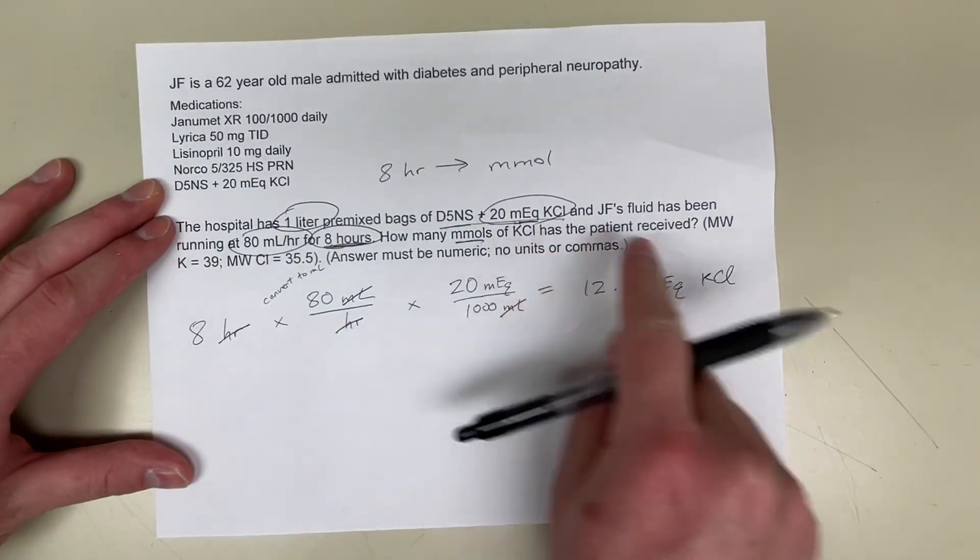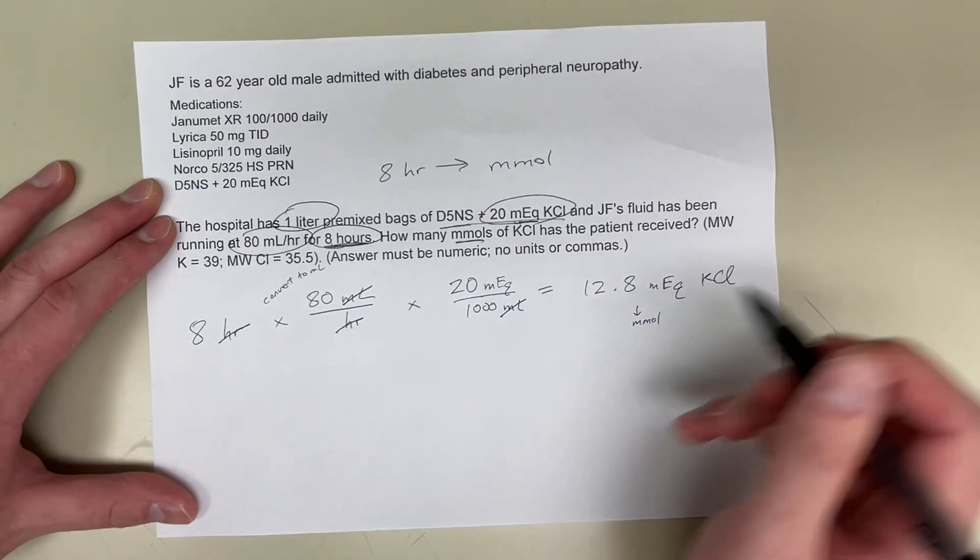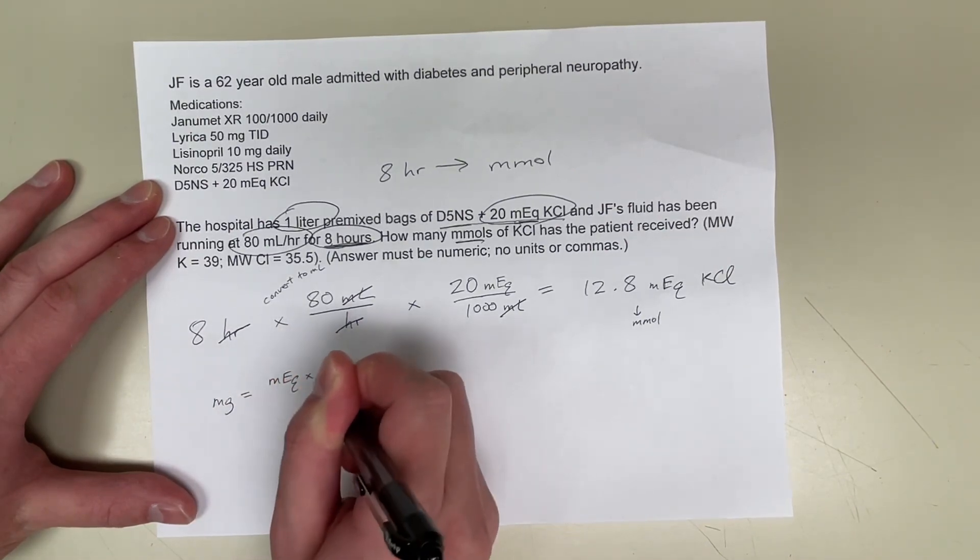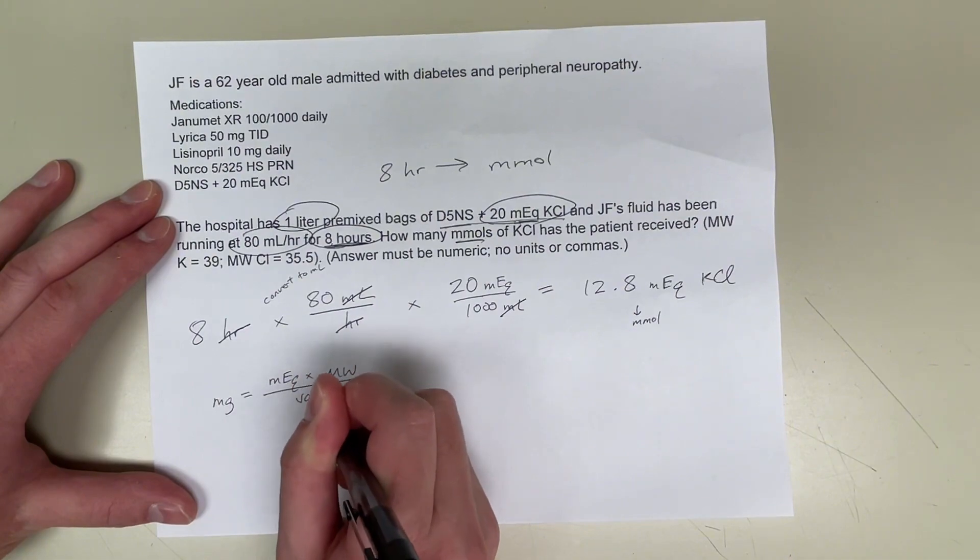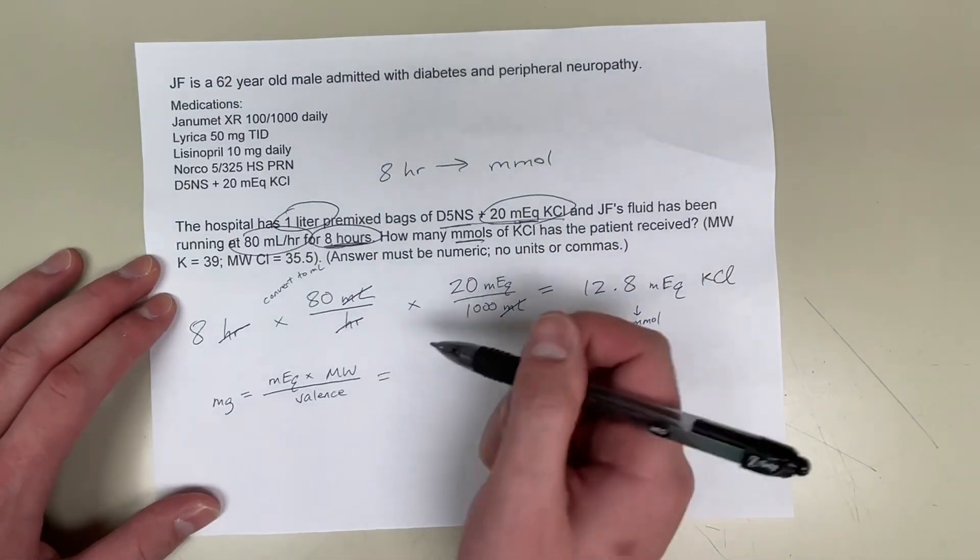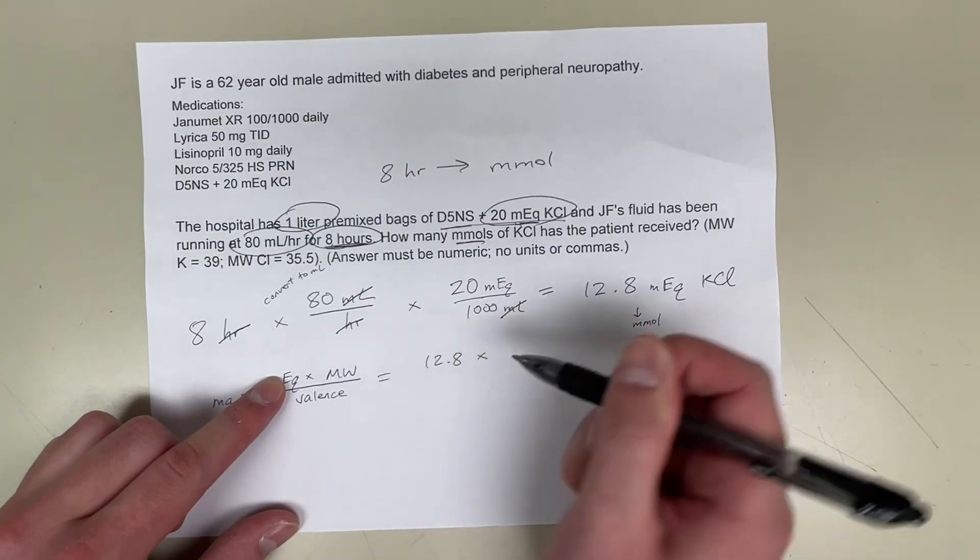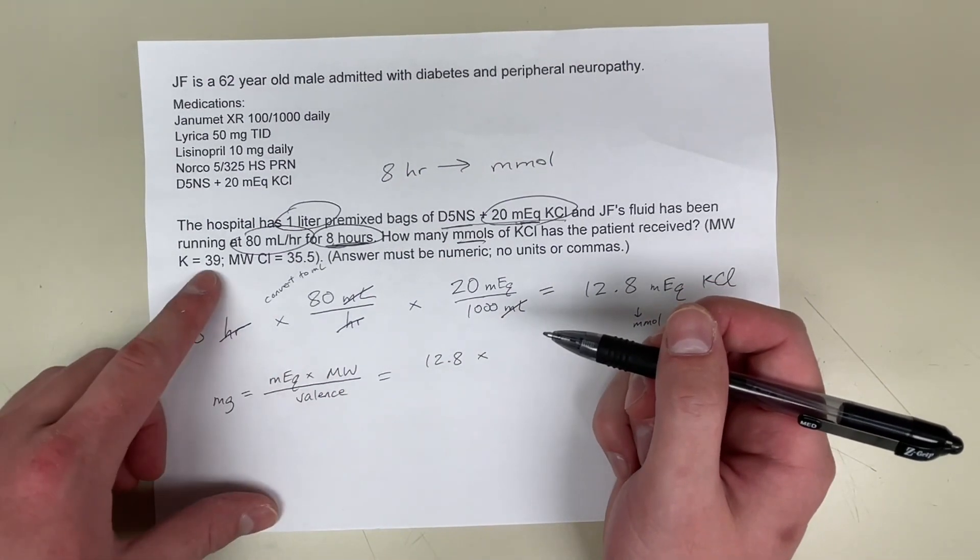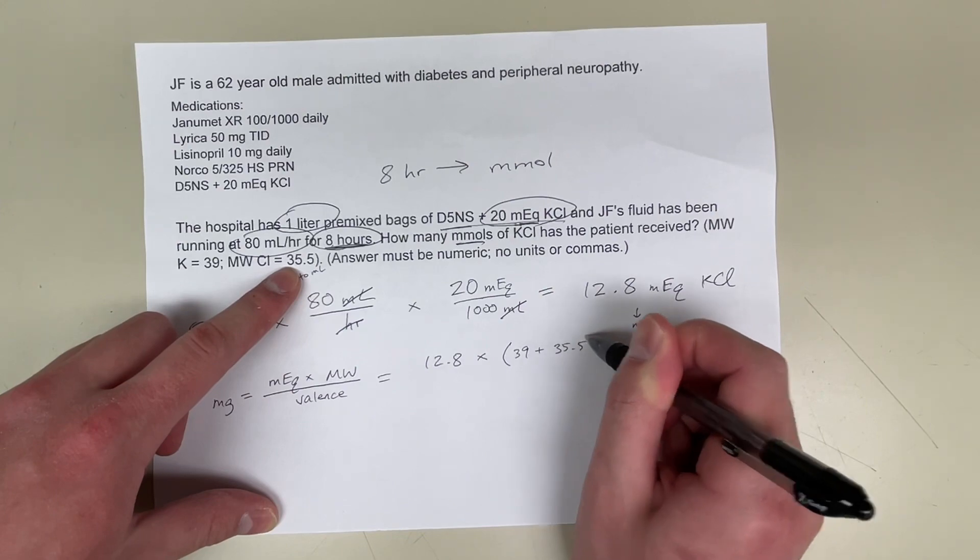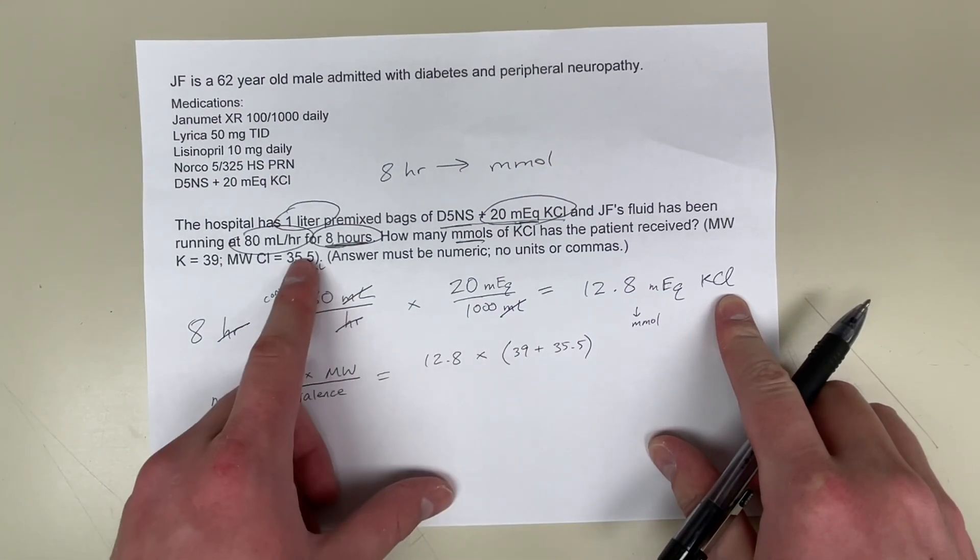Now I want to convert this milliequivalents here to millimoles. So I'm going to use the formula: milligrams equal milliequivalents times the molecular weight, all divided by the valence. This is just a formula that you have to memorize. So I'm just going to fill in my formula. Milliequivalents I just calculated to be 12.8, multiply it by the molecular weight of potassium chloride, which is given here. So it would be 39 plus 35.5, right? Because there's one potassium, so that's why I just put 39, and there's one chloride ion, so that's 35.5.